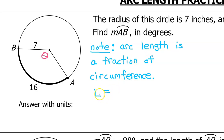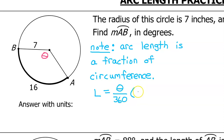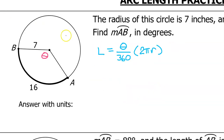So the arc length L is a fraction. What fraction? The fraction is theta over 360 — the partial degrees divided by the total number of degrees in any circle. So we have the arc length is a fraction of the circumference, and the formula for circumference is 2 pi r. This formula basically says the arc length is a fraction of the circumference.